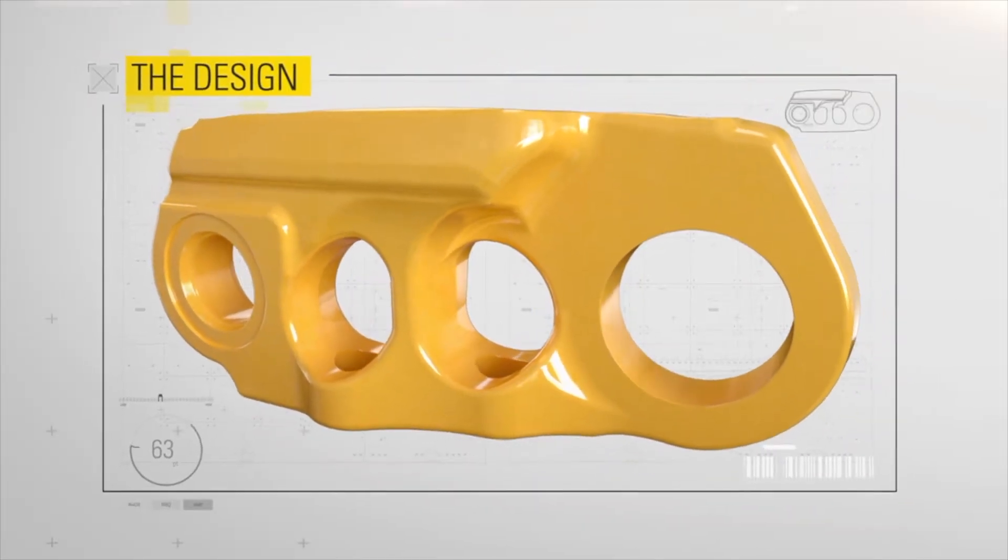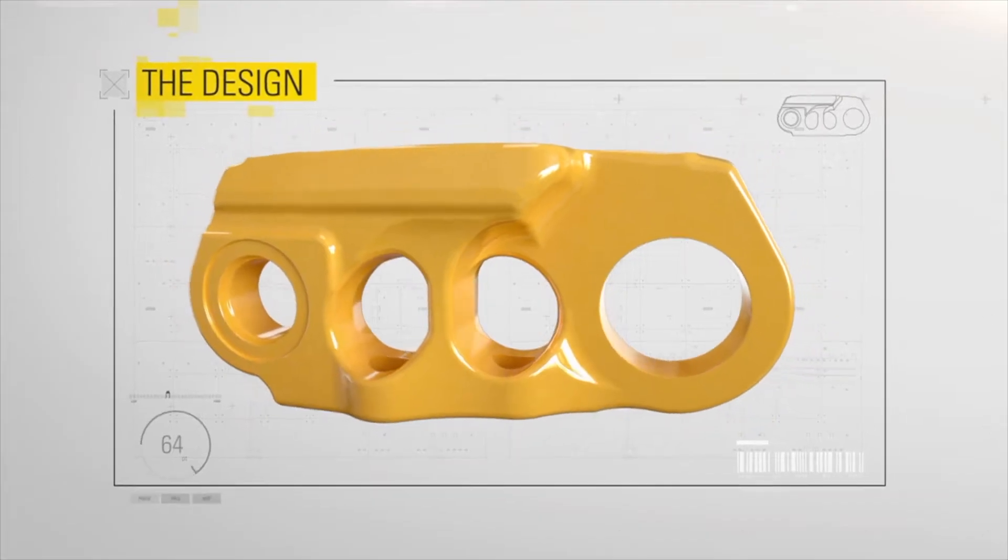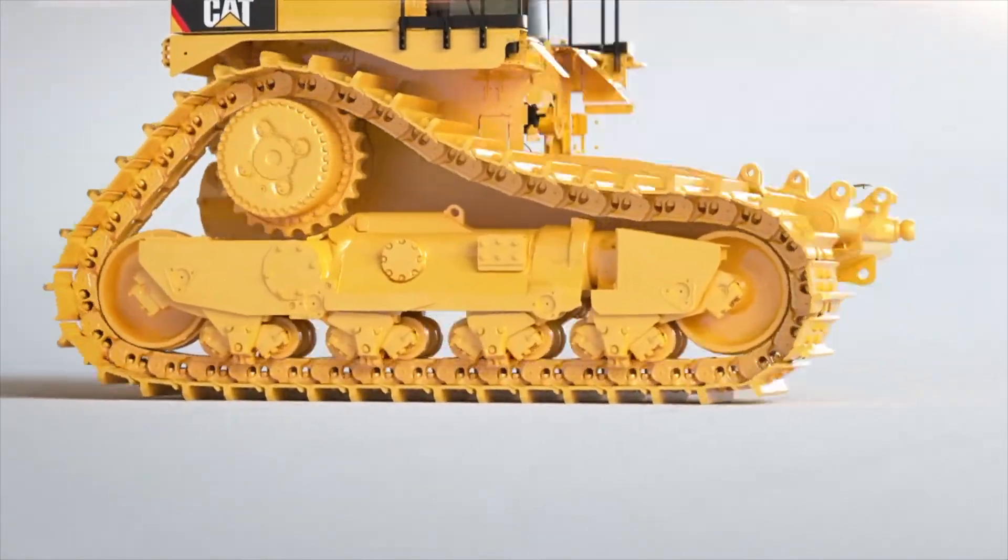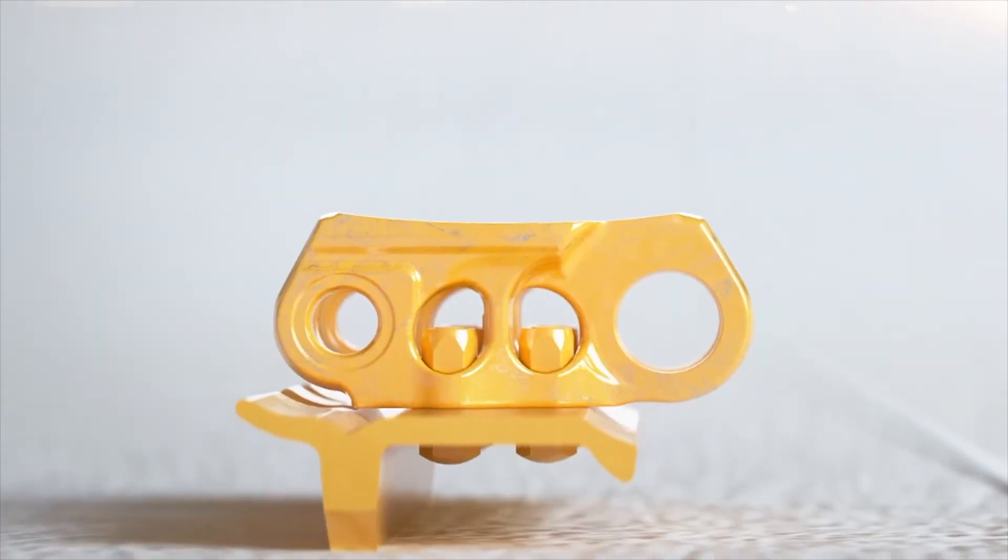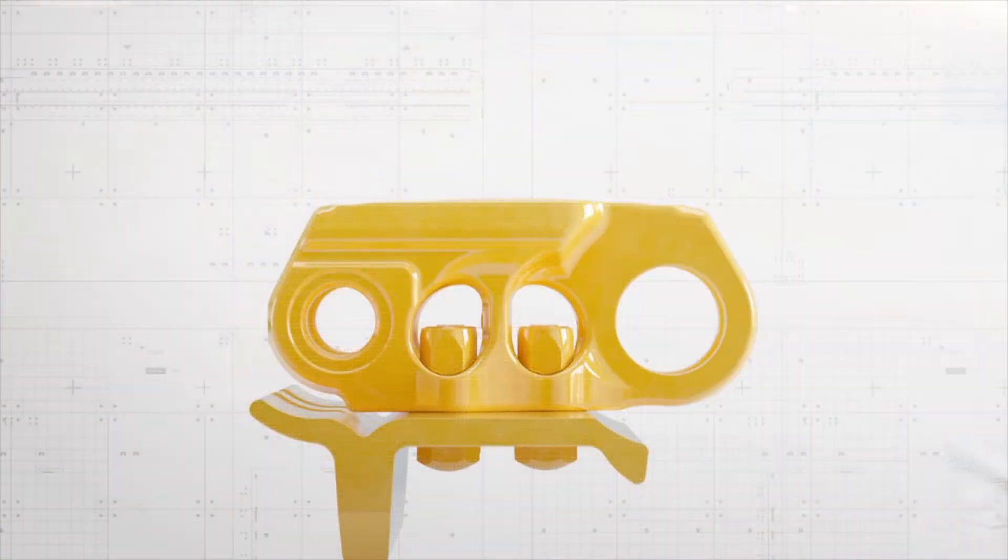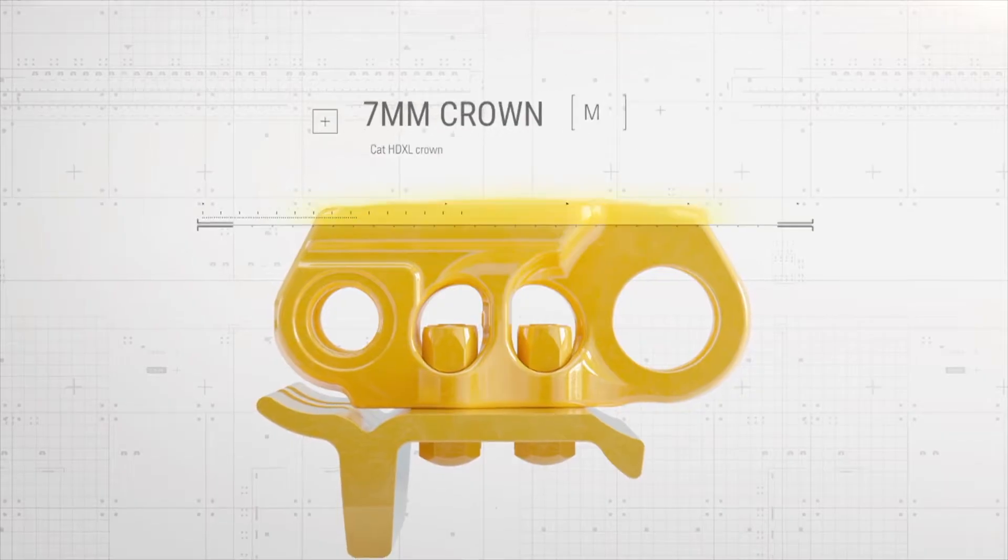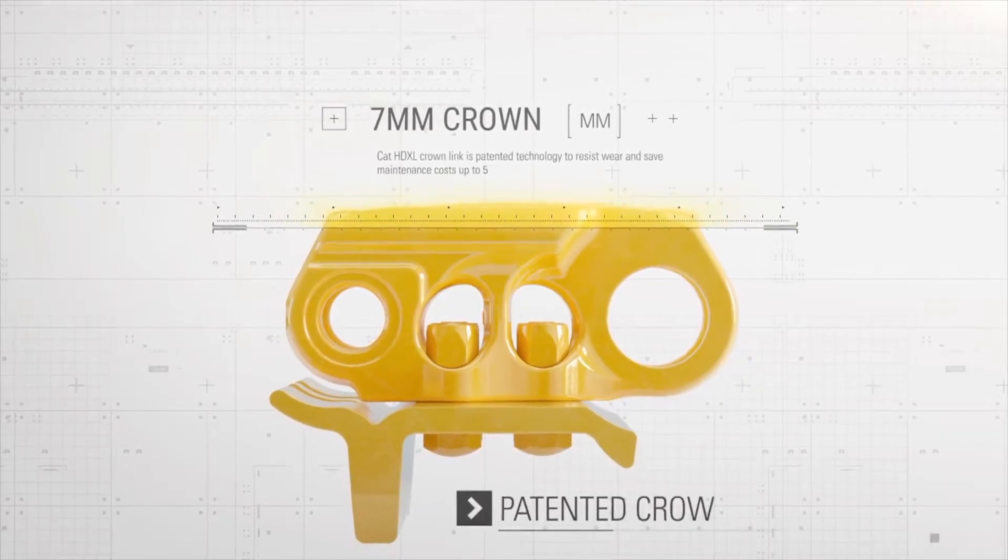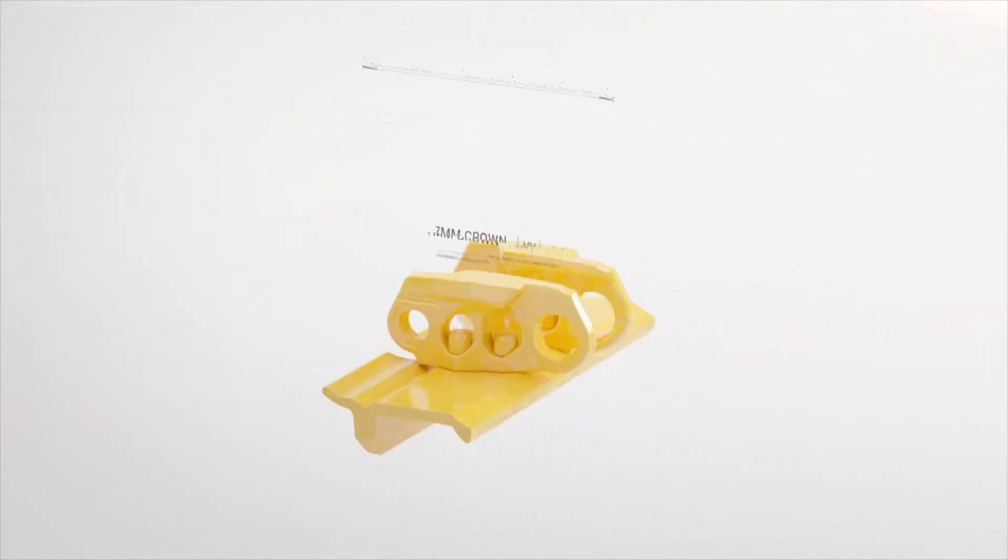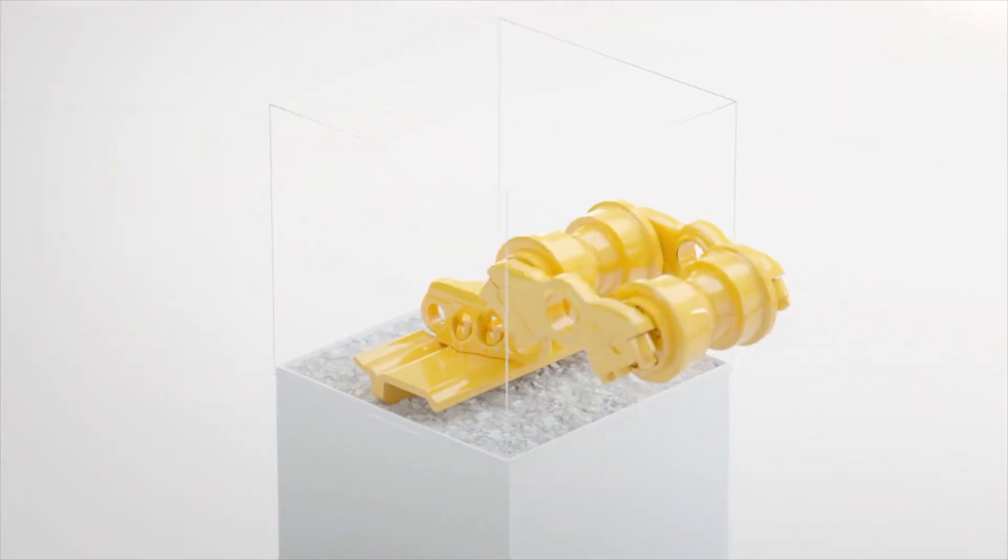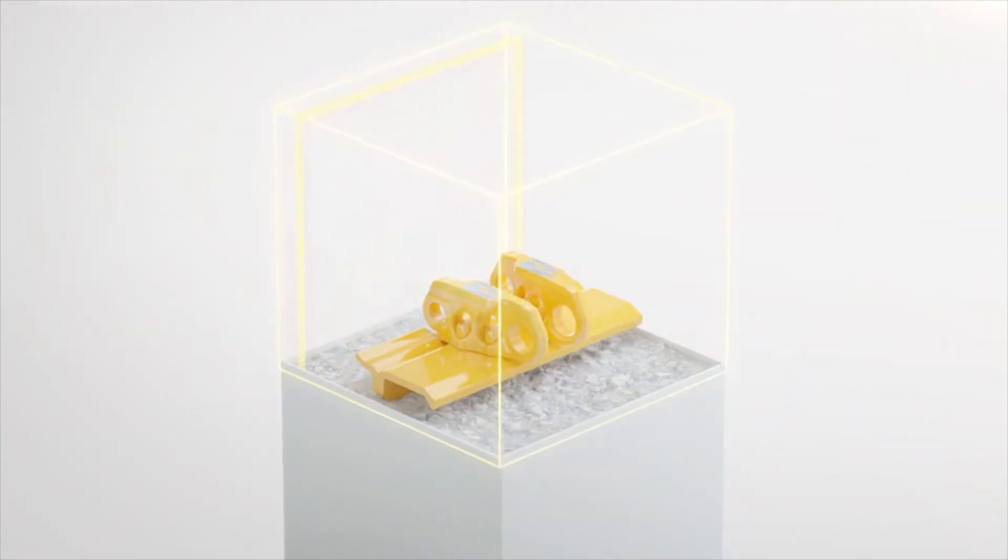Competitors simply can't match this protective design. Here's why: undercarriage links contact track rollers and idlers, which leads to scalloping, then vibration, and ultimately replacement. HD XL with DuraLink features a crowned link design patented by Caterpillar. Its curved wear surface creates a buffer against wear, so you get thousands of hours of production before scalloping occurs.